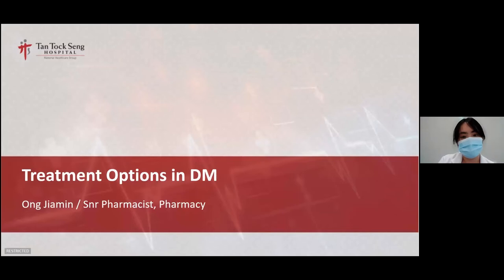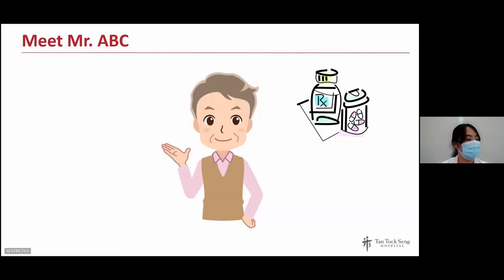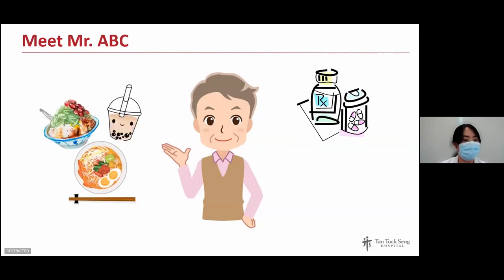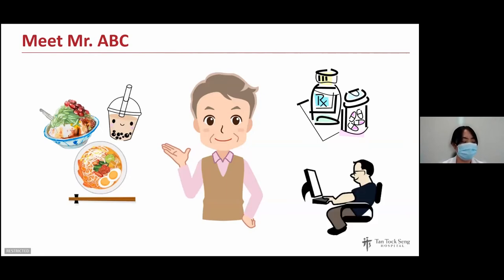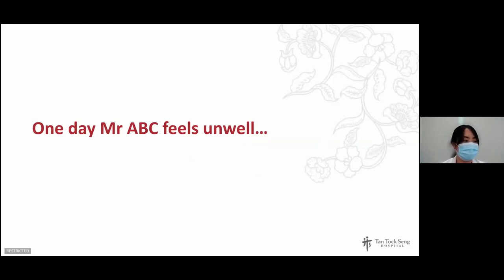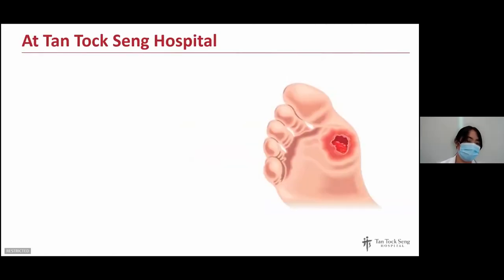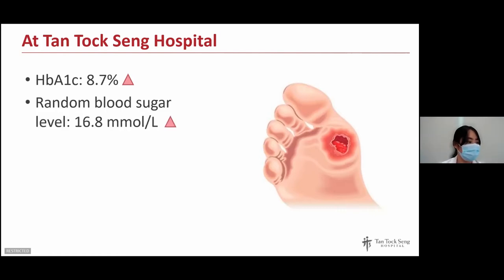I'm Jia Min and I'll be sharing about treatment options for diabetes and how to manage low blood sugars. This is Mr. ABC — a 50-year-old gentleman with type 2 diabetes on metformin and glipizide. He likes local food, drinks bubble tea very regularly, is busy with work, and has no time to exercise. One day he feels unwell, notices a wound on his foot, and seeks treatment. At the emergency department, his HbA1c is high at 8.7% — above his target of 7% — and his random blood sugar is 16.8 mmol/L, above the target of less than 10 two hours after a meal. He has been experiencing thirst and frequent urination more frequently in the past week.